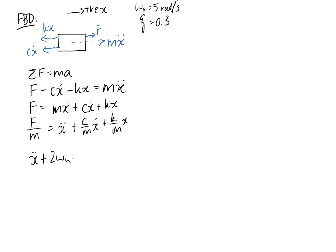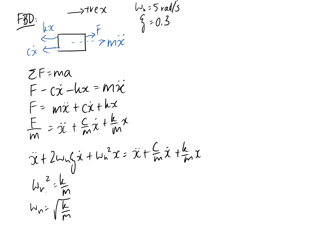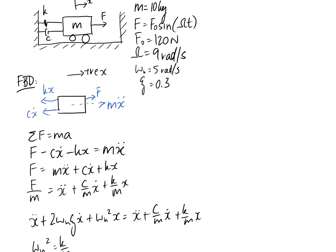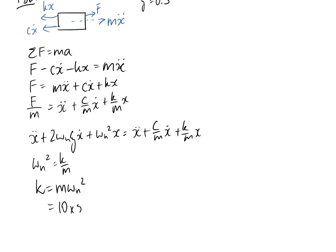This is our general form. Starting with the omega-n-squared term, we can equate them together. What we're looking for this time is K, so we rearrange for K. Substituting in: we know our natural frequency is 5 and the mass in our system is 10 kilograms, so it's going to be 10 times 5 squared. This gives K equal to 250 newtons per metre.